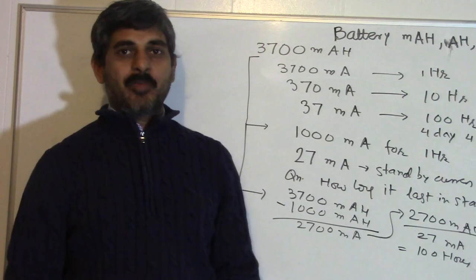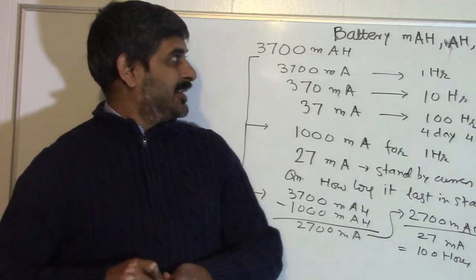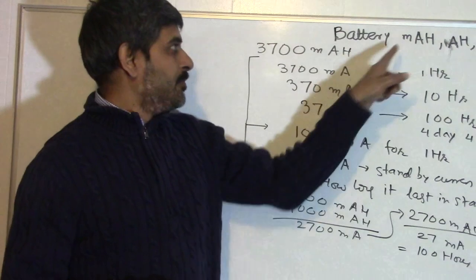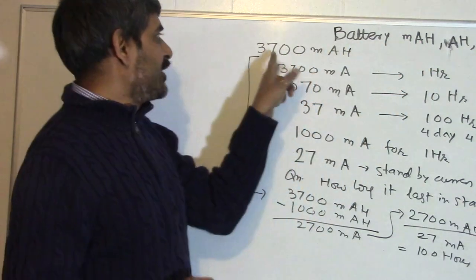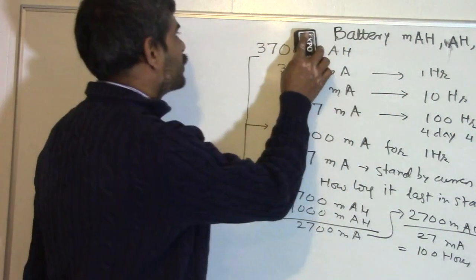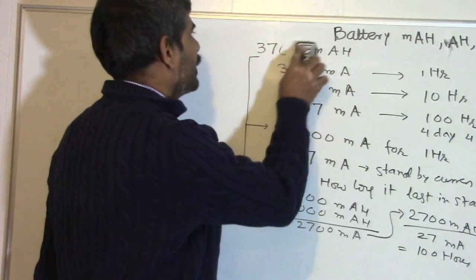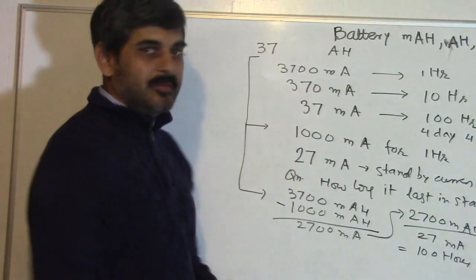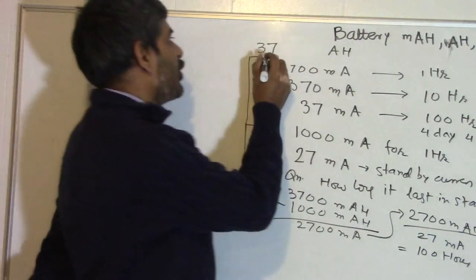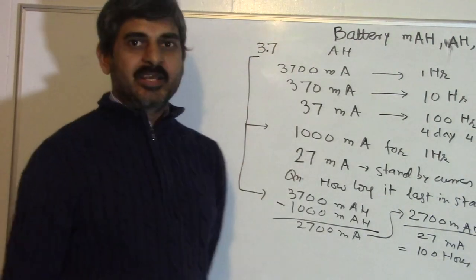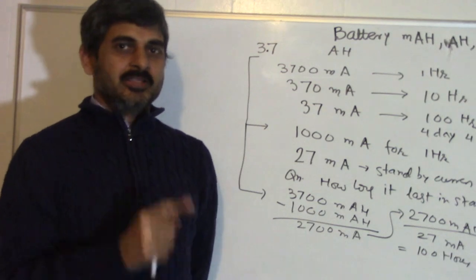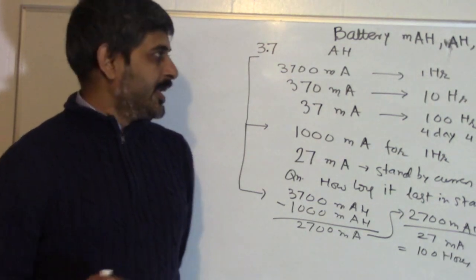That is about battery milliampere hour. Sometimes, instead of milliampere hour, you are given ampere hour. For example, instead of 3700 milliampere hour, you could also say 3.7 ampere hour. Basically, we are measuring the current in amperes instead of milliamperes.